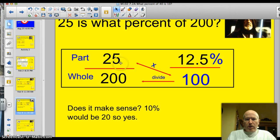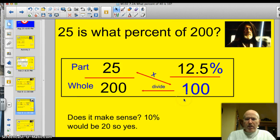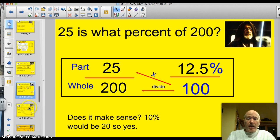25 to 200, 12 and a half percent out of 100. I got 10% of it would be 20. 10% of 200 would be 20, right? So 25 at 12 and a half percent? Yeah, that makes sense. Good job. We're ready to move on to example three.